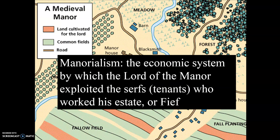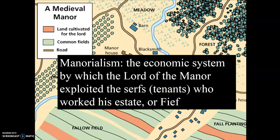That brings us to another term we should know: manoralism. Manoralism is the economic system — it explains how land is used. Where feudalism describes the political system of who's in power, manoralism describes the economic system of what people are doing with the land. The lord of the manor is given a gift of land in exchange for his loyalty to some greater individual — a king or a greater lord — and then the lord can exploit the serfs, who are tenants, to work his estate.